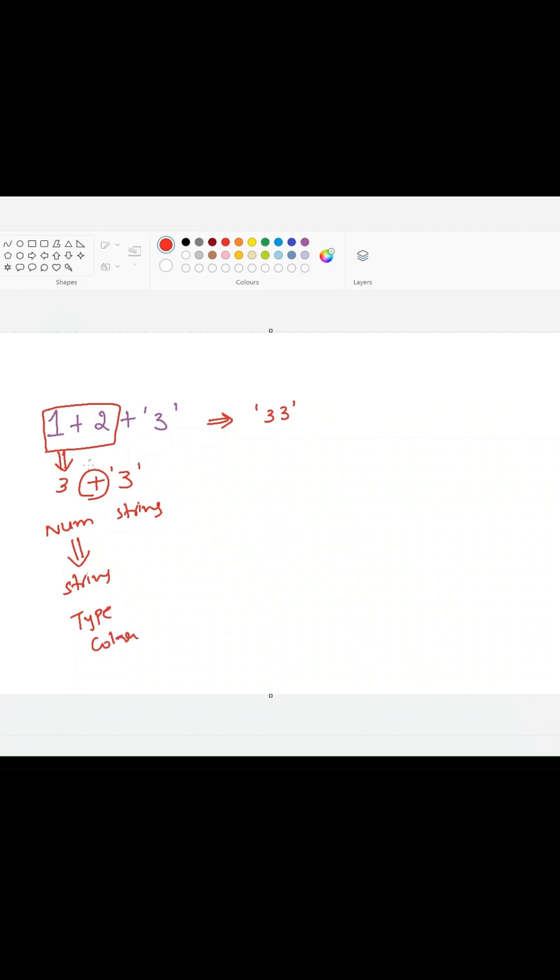So due to this, our expression will become string 3 plus string 3. Whenever we use an addition operator between two strings, JavaScript will try to convert this into a single string by using string concatenation. So our output will become string 33 here.